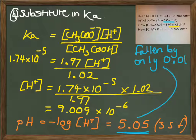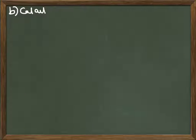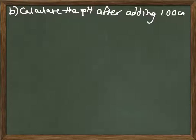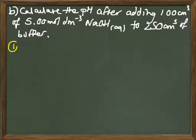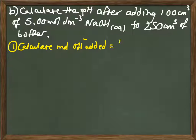Not a significant change there. Our buffer is working as it should. I'm going to do the same thing, but this time see what happens to the pH after adding 1 centimetre cubed of 5 molar sodium hydroxide. Base this time. Let's see what happens to the pH of our buffer solution, our 250 centimetre cubed portion.